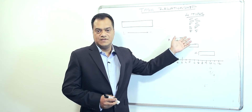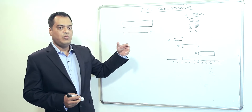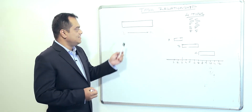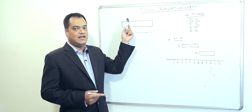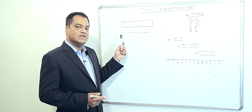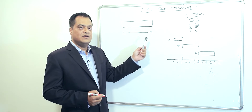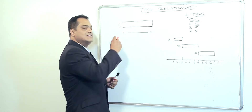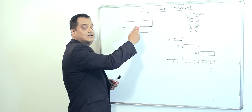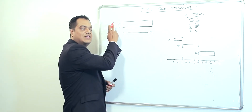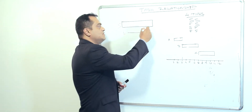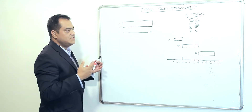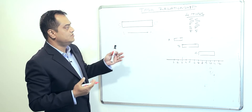Let's see how we plot this in a Gantt chart. A bar in a Gantt chart always goes from left to right. When we say 'start,' it is always going to be on the left-hand side — it will never be on the right. And 'finish' is always going to be on the right-hand side in the Gantt chart.